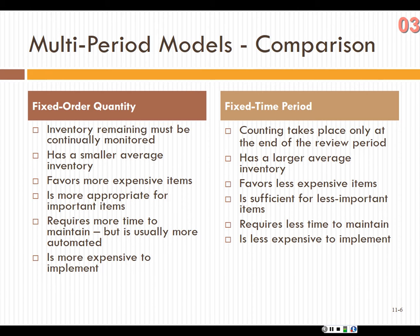Fixed time period: you only count during the review time period. If you place an order every Monday or on the 1st and 15th of the month, you're only checking inventory on those days — it's kind of a low-budget maintenance. Because of that, you typically have a larger average inventory. It's more favorable to less expensive items like screws, nuts, and bolts — having an extra 1,000 doesn't break the bank. It requires less time to maintain and is less expensive to implement.